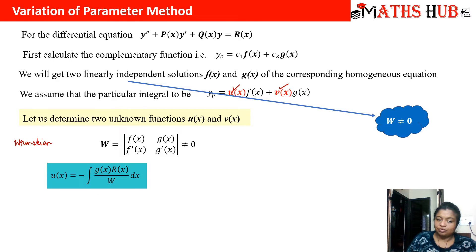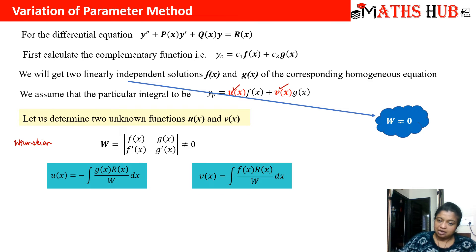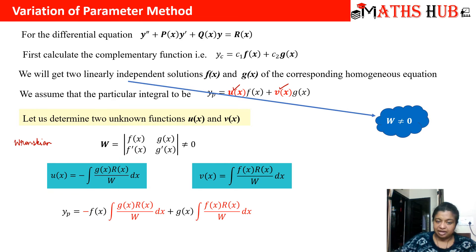u(x) is calculated using the rule: minus the integral of g(x)·R(x) divided by the Wronskian dx — where R(x) is the right-hand side function given in the problem. Similarly, v(x) is the integral of f(x)·R(x) divided by the Wronskian dx. Finally, after calculating u(x) and v(x), we substitute back into y_p, giving y_p = u(x)·f(x) + v(x)·g(x).